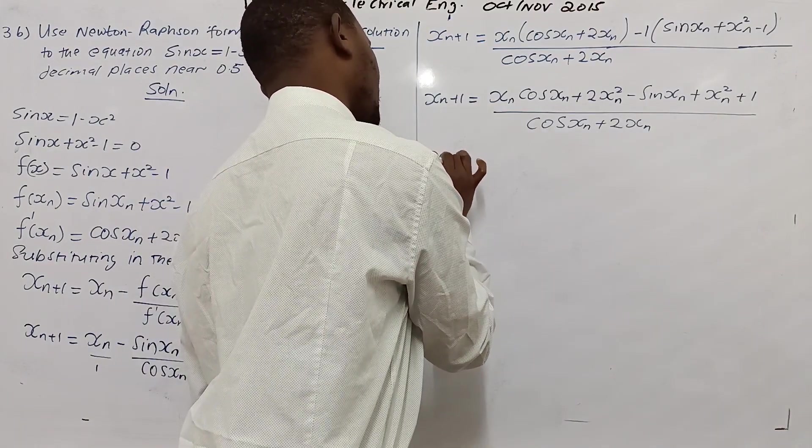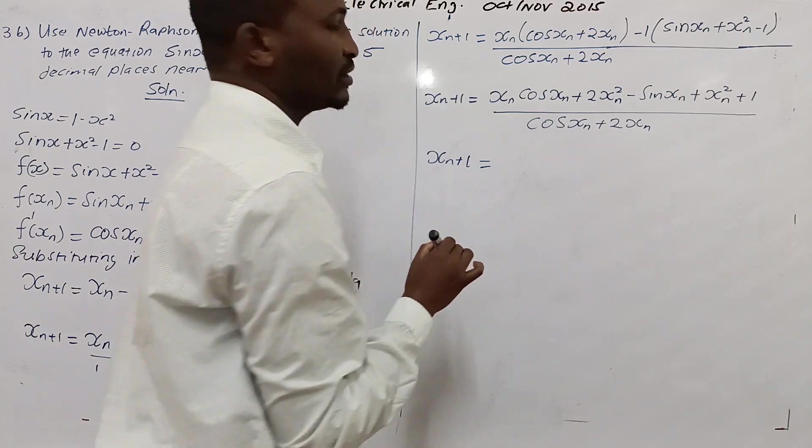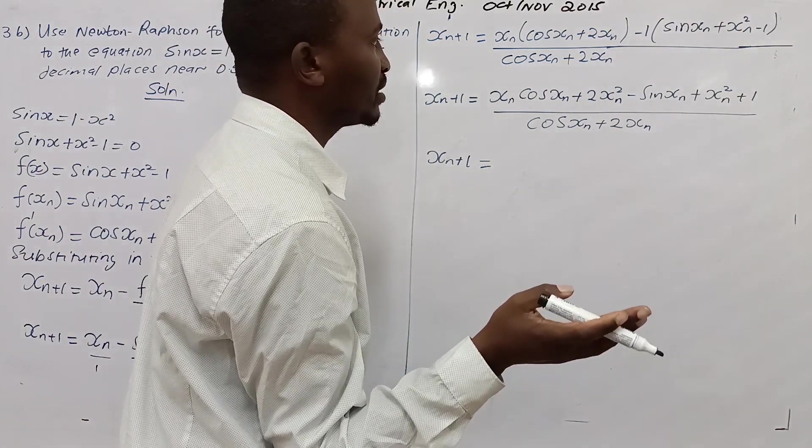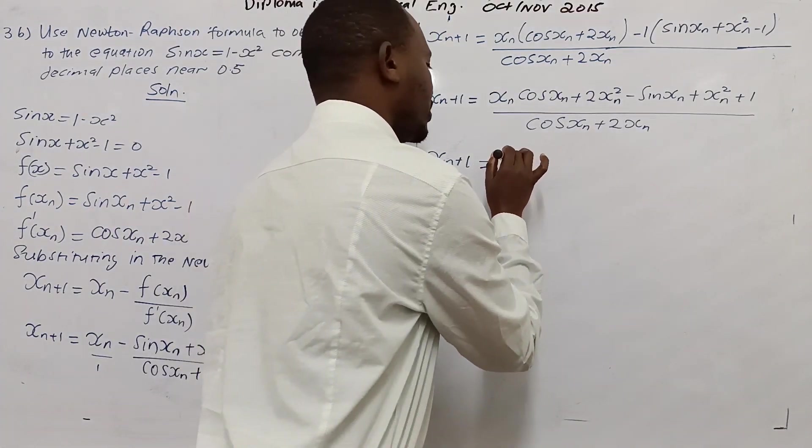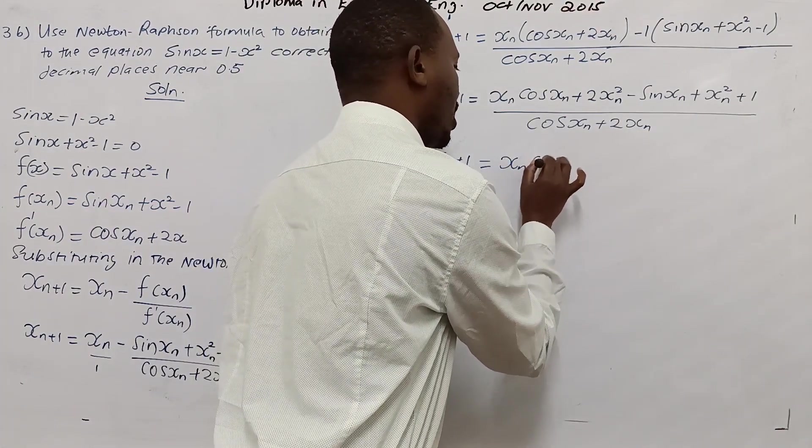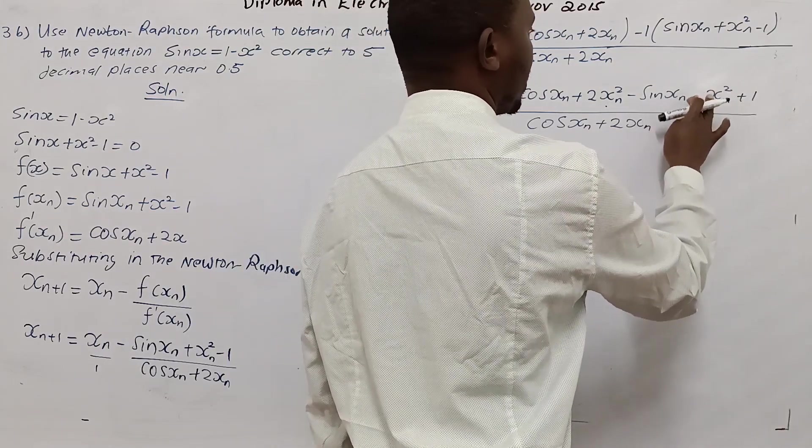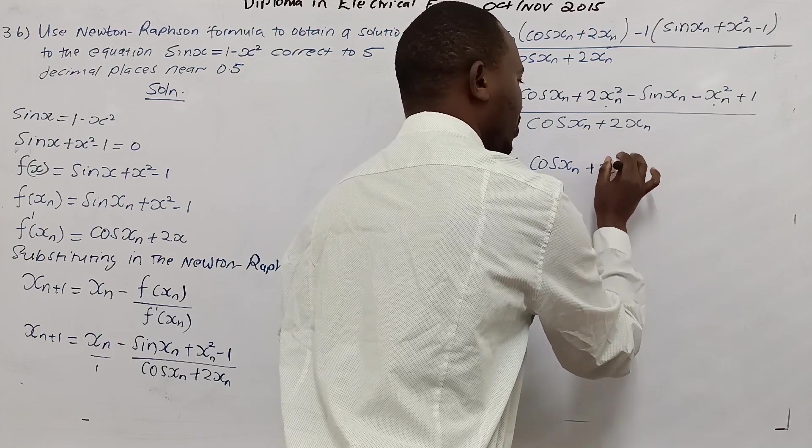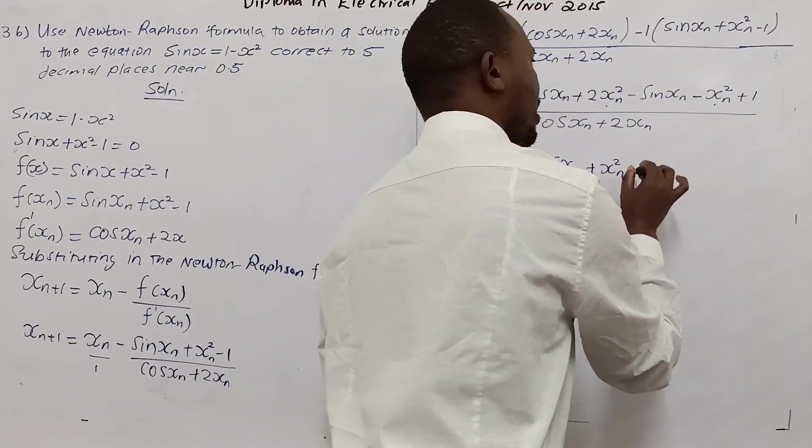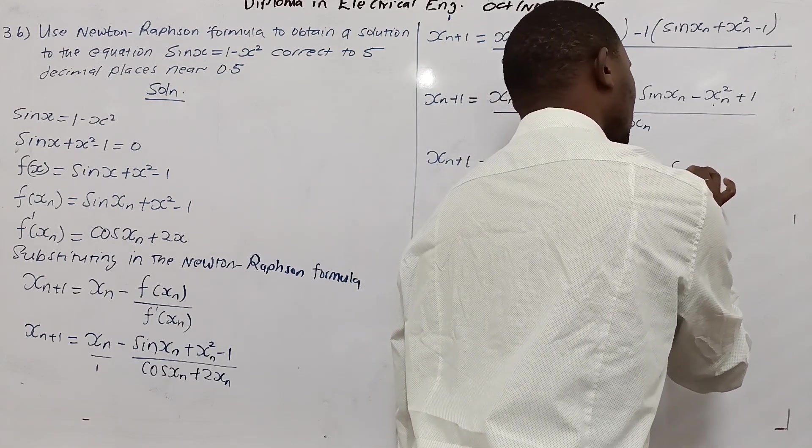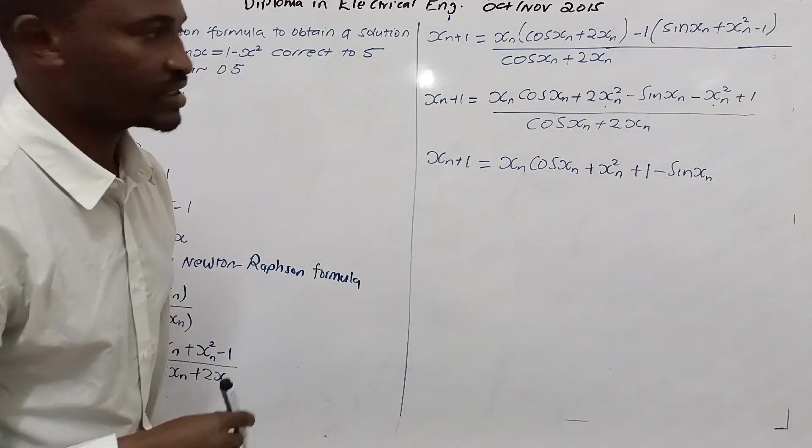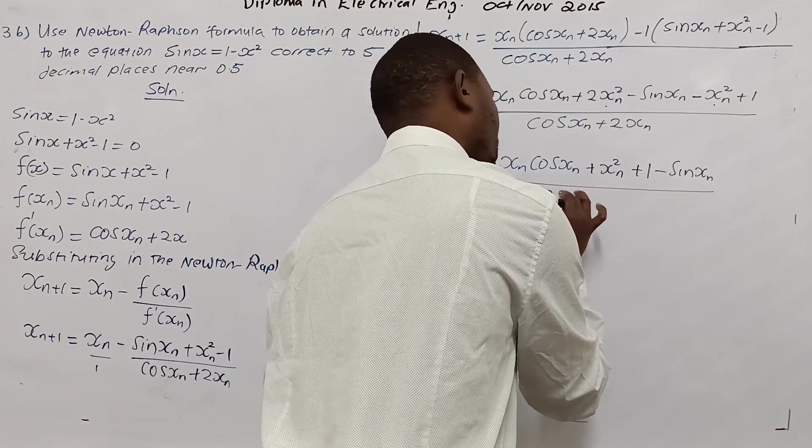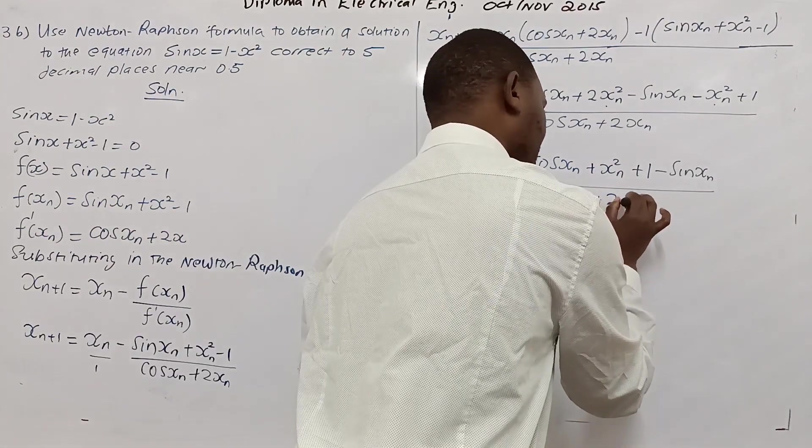We have xn plus 1 now becomes xn cos xn plus 2xn squared minus sin xn minus xn squared plus 1, all over cos xn plus 2xn. I think there is a construction going on. Actually creating YouTube videos sometimes is not as easy. There is construction now, so there will be a bit of noise, but I hope it will be able to go.